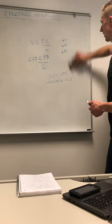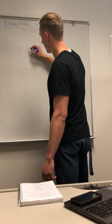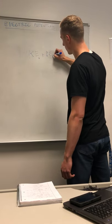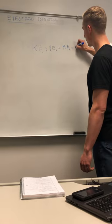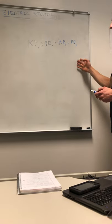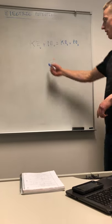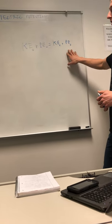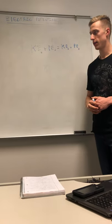Last but not least, another important equation is conservation of energy: kinetic energy initial plus potential energy initial equals kinetic energy final plus potential energy final. This works for both gravitational potential energy and electric potential — whatever the total energy is initially, it equals the total energy finally. And those are the basics of electric potential and potential energy.